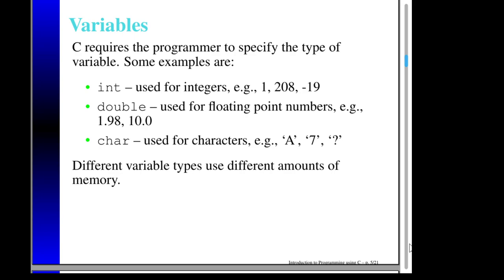In terms of things we can do in any programming language, the simplest is to store information, and we store information in variables. In C, we have to specify what the variable type is when we're creating the variable, and once we specify that type, there's no changing it. The three variable types that will allow us to write most of our code are the int, the double, and the char.